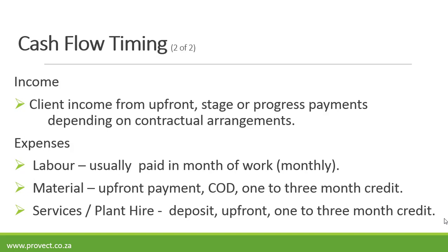Labor is usually paid in the month of work. For material, you can pay upfront, cash on delivery, or one to three months credit from your supplier. For plant hire, you normally need to give a deposit, or it can be an upfront payment or one to three months credit.